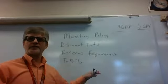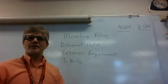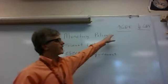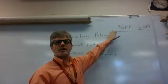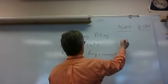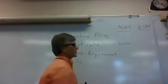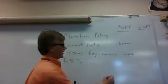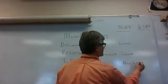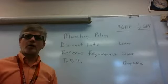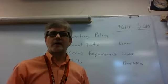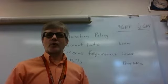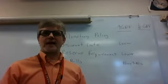With all three tools — the discount rate, reserve requirement, and T-bills — you increase or decrease them to affect the economy. To raise GDP, you would lower the discount rate, lower the reserve requirement, and buy T-bills. All of these increase the money supply, make borrowing easier, and lower interest rates, which stimulates more loans. With more borrowing there is more consumer spending.